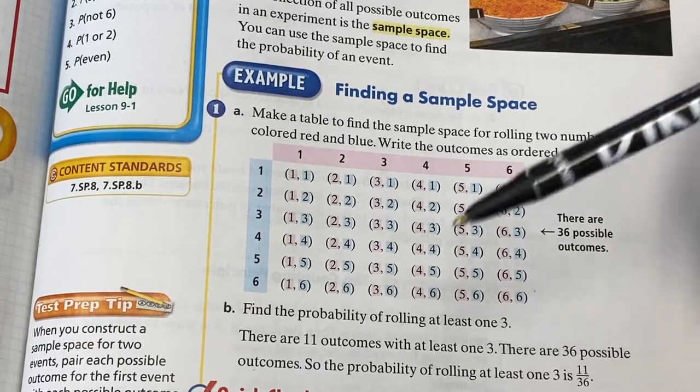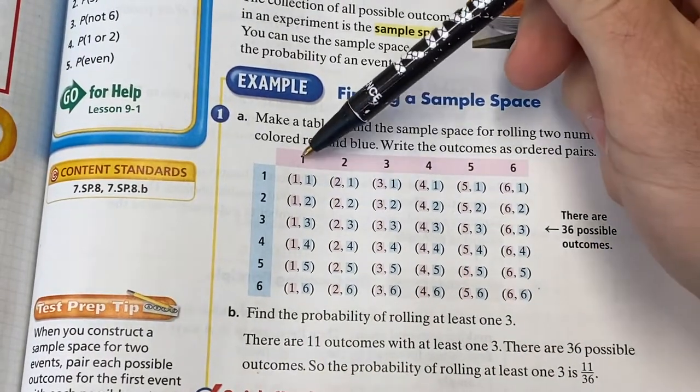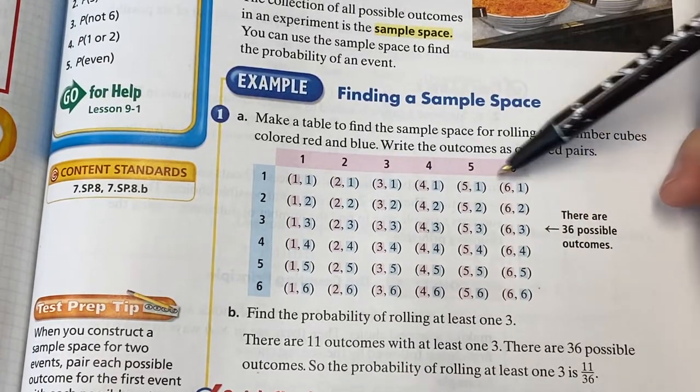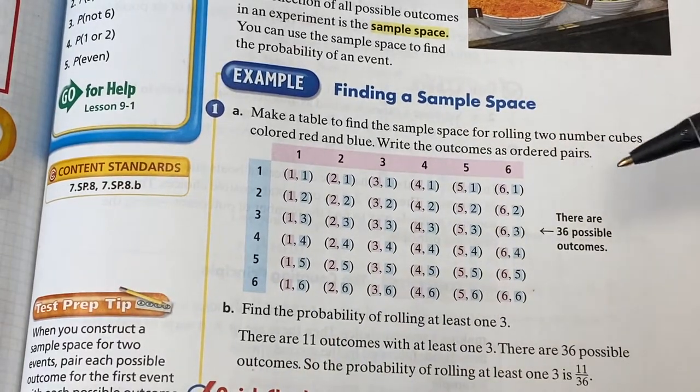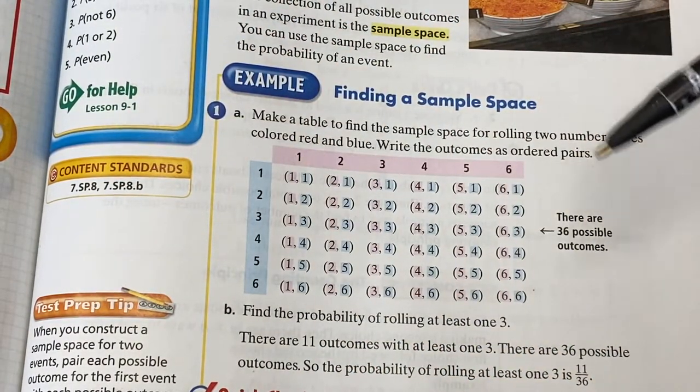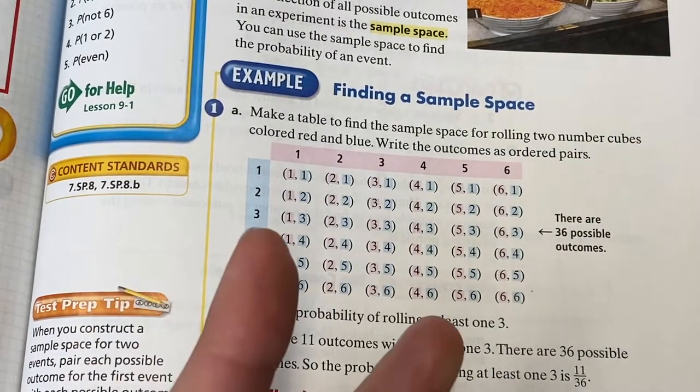This is very, very easy. It might be a little bit time consuming, but it is very easy. So one, one, two, one, three, one, four, one, five, one, six, one, and so on. And this right here, this table is known as the sample space for writing the outcomes of rolling two number cubes.